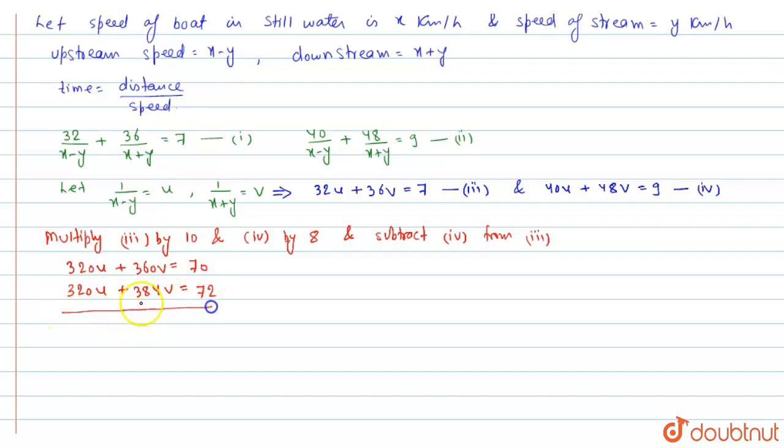For subtraction we will invert the sign. So the u terms get cancelled. We are left with minus 24v is equal to minus 2, which implies v is equal to 1 by 12.